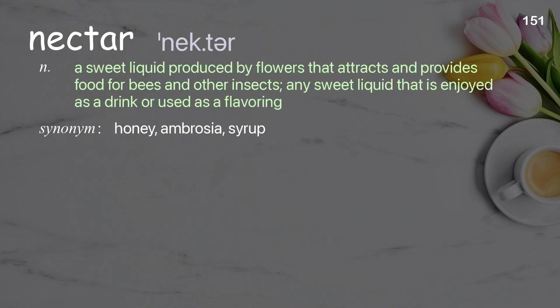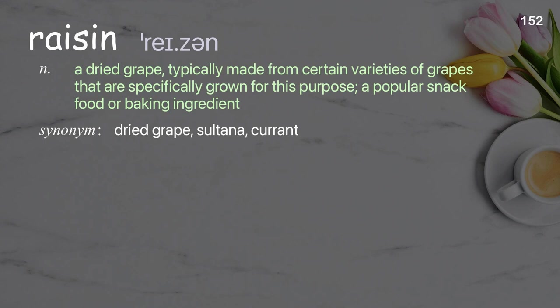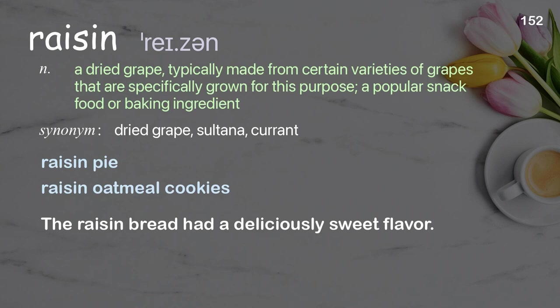Nectar: a sweet liquid produced by flowers that attracts and provides food for bees and other insects; any sweet liquid that is enjoyed as a drink or used as a flavoring. Examples: nectar of the gods, fruit nectar. The nectar of the flowers attracted many bees to the garden. Raisin: a dried grape, typically made from certain varieties of grapes specifically grown for this purpose; a popular snack food or baking ingredient. Examples: raisin pie, raisin oatmeal cookies. The raisin bread had a deliciously sweet flavor.